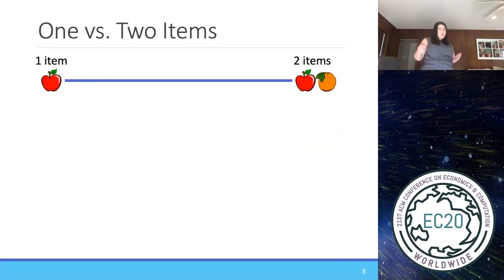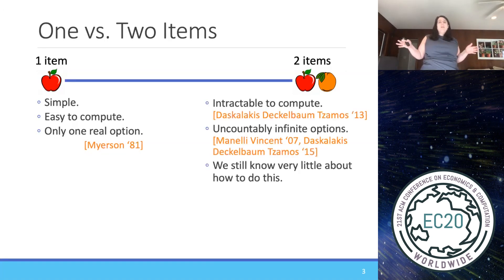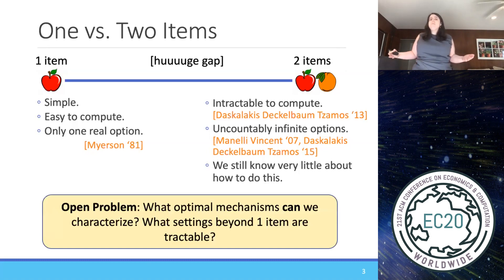So what happens when we go from one to two items? When we only have one item, everything is simple, it's easy to compute, and there's only one real option for the buyer. She can pay the price and take the item, or she doesn't participate. But as soon as we go to two items, it's intractable to compute. There are countably infinite options offered to the buyer. There could be one lottery ticket that she buys for different probabilities to get the apple and the orange, and then there could be just a slightly different lottery ticket for a slightly different price, and thus we could have countably infinite options for these different lottery tickets. And we still know very little about how to find the optimal mechanism. And there's a huge gap between how to sell just one item and how to sell two different items. And so what remains an open problem is what optimal mechanisms can we characterize? What settings beyond one item are tractable?